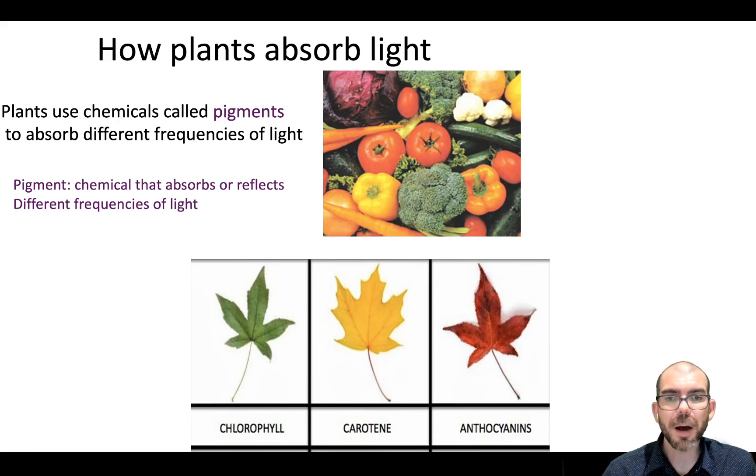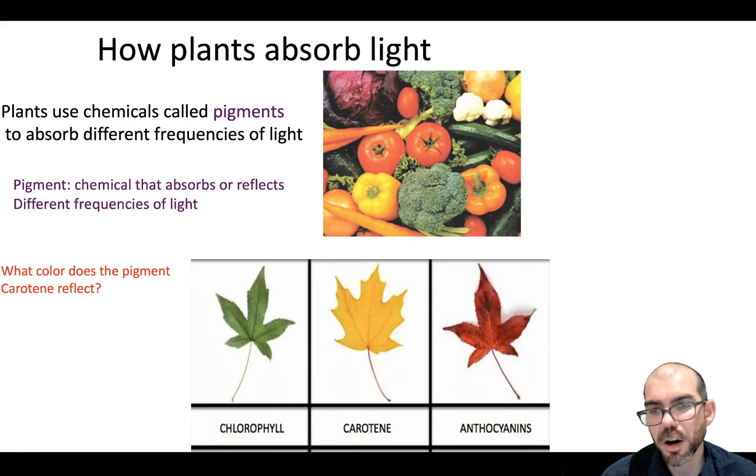So when we think about how plants absorb light, plants are going to be able to do this using a molecule called a pigment. Pigments are chemicals that just absorb or reflect different frequencies of light. For example, if you look at these three leaves down here, what color does the pigment carotene reflect? Well, since you can see yellow, you can only see what's reflected. I know that yellow is being reflected from carotene.